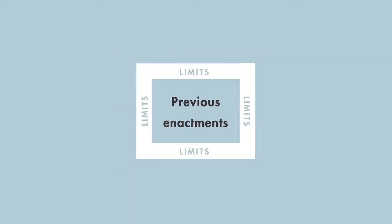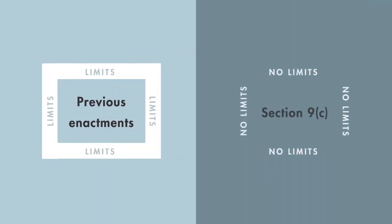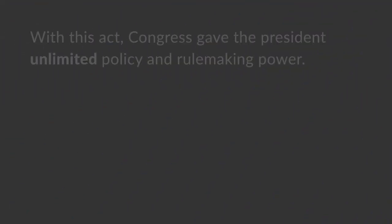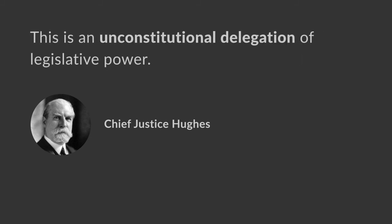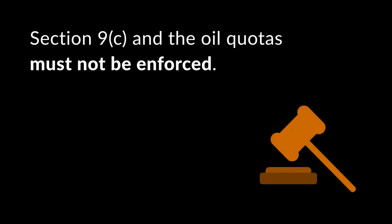The Supreme Court found that Section 9C differed from these earlier acts. Like previous congressional enactments, other sections of the Act contained clear policy enactments limiting the delegation of legislative power. But Section 9C provided no guidance or limitations on the President's power to regulate oil shipment, and the rest of the Act didn't provide any guidance or limits on this power either. The Supreme Court noted that this was the first time that the President was granted the power to set and enforce his own policy, with no congressional standards or restrictions. Congress effectively gave the President unlimited policy and rulemaking power — this, the Court held, was an unconstitutional delegation of legislative power that violated the separation of powers doctrine. The Supreme Court reversed the appellate court and remanded the case to the District Court with instructions to enter permanent injunctions against the enforcement of Section 9C and the administration's petroleum allocation rules.